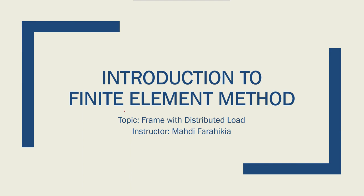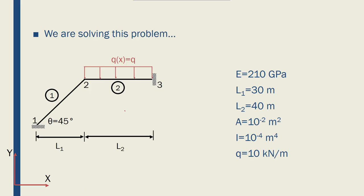Let's continue with the example of a frame with distributed loads applied to it. This is the problem we're solving, with these values for its properties: length, cross-section area, and distributed load. We have two elements and three nodes.